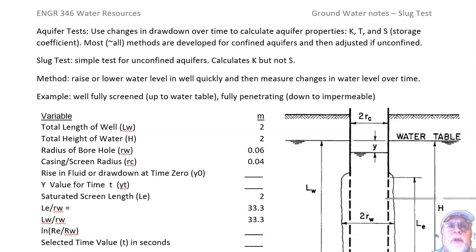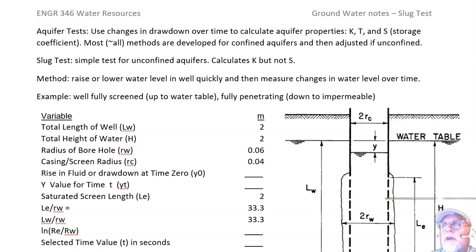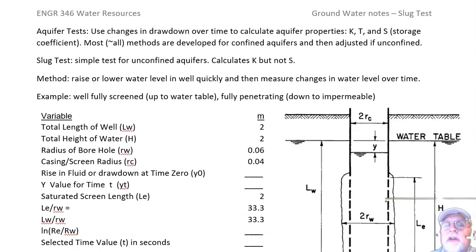A lot of times for groundwater supplies for a big city they'll have a well field — a number of wells. By pumping those wells they can keep the drawdown at any one well from being too low, and they can alternate which wells are on and off to give other wells time to recover. The drawdown takes some time; we did the equilibrium well equations and it actually takes some time to get there, and how much time it takes is important and can tell us something about the aquifer.